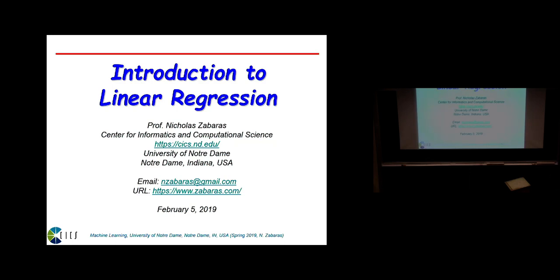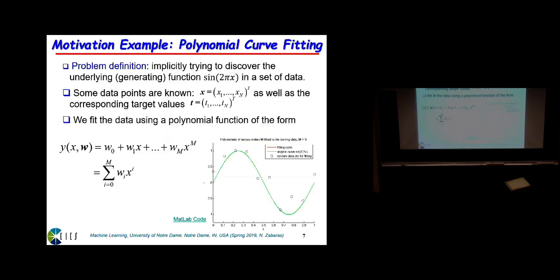The problem setup: somebody gives you x coordinates and y coordinates — following Bishop's notation, he calls this t, the target value. The curve you see is the generating curve. You select a few x points, add some noise to the exact values, and those become the training points. The idea is we'd like to do predictions for arbitrary x values to say what the target value t is. Eventually, on Thursday, we'll do this in a fully Bayesian setting, but for now think of fitting a curve using polynomials.